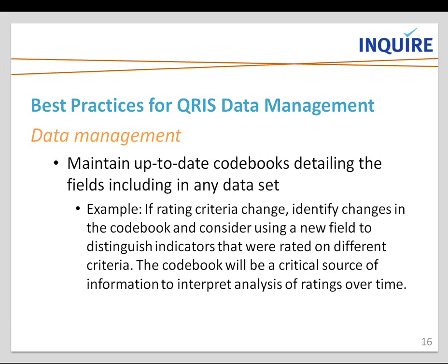For example, if your state's QRIS was a point system up until 2010 but then switched to a hybrid point and block system that year, you would want to create a new data element to capture quality ratings after that change. The definitions and notes from your code books would provide future users of the data with the context they need to understand why two different data elements existed to capture really the same type of information.